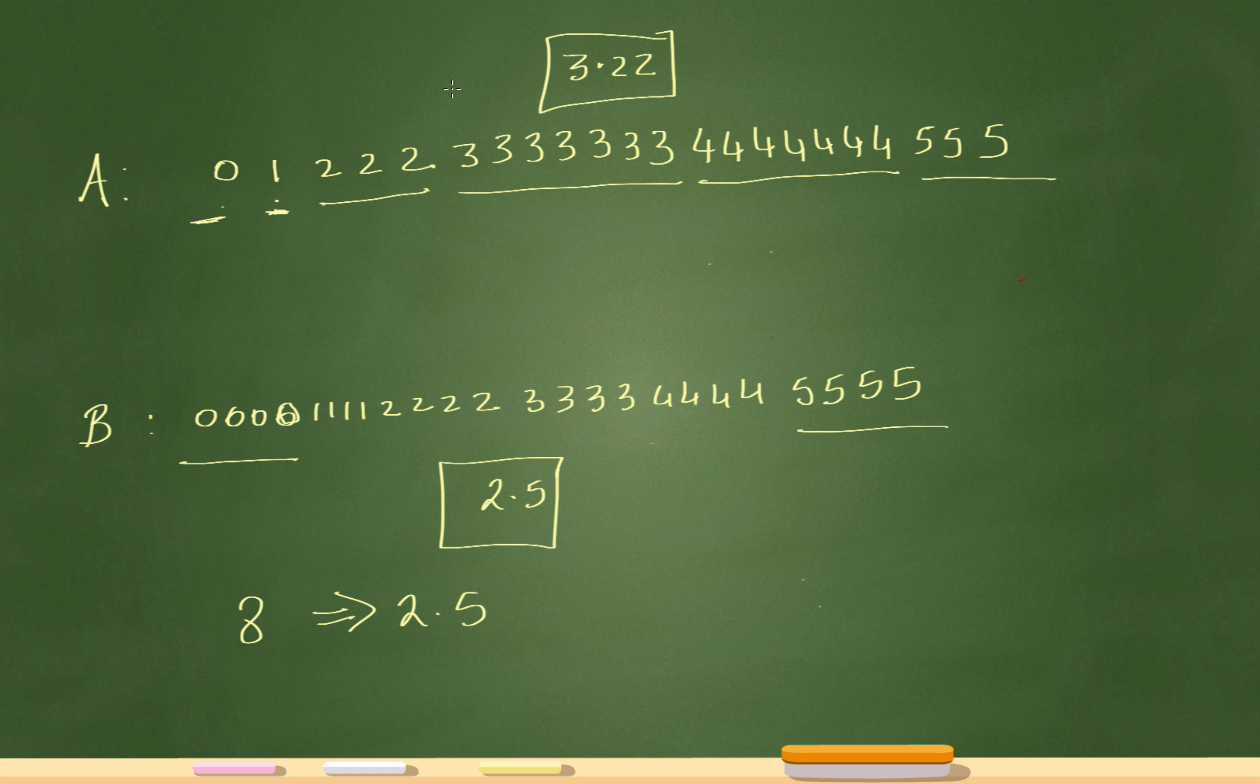So if I were to make a judgment about the standard deviation, I would say that B would be greater. Because this one has a greater amount - there's eight numbers that are a distance of 2.5 away from the mean.